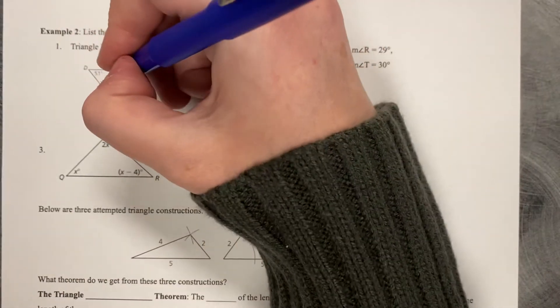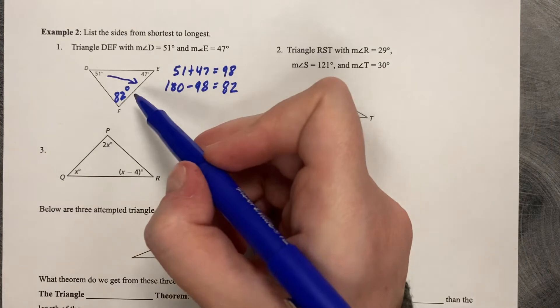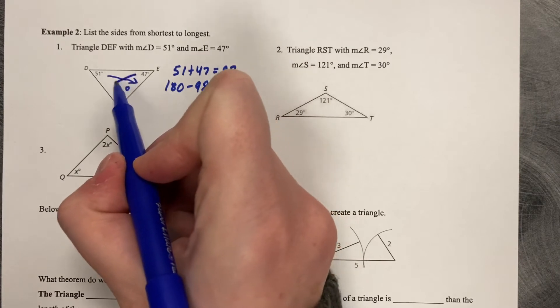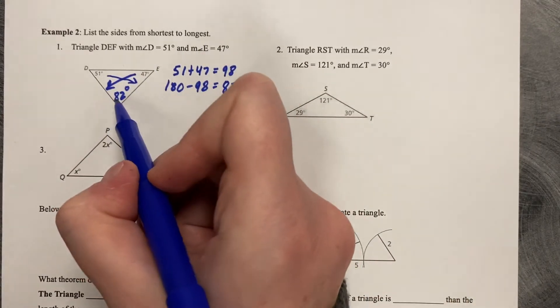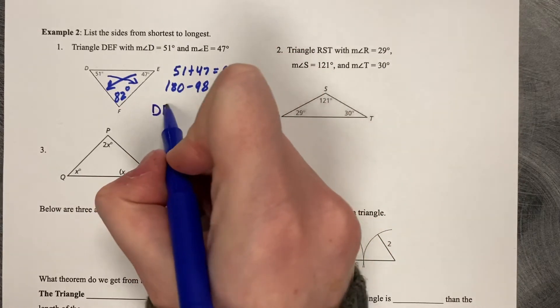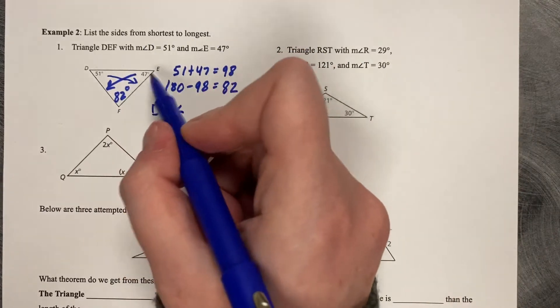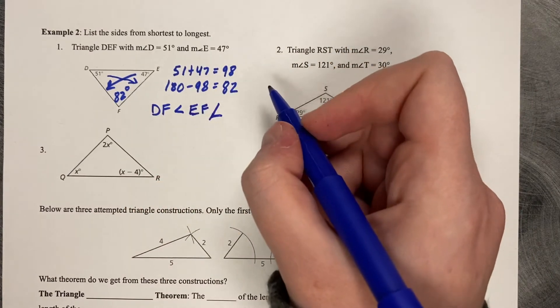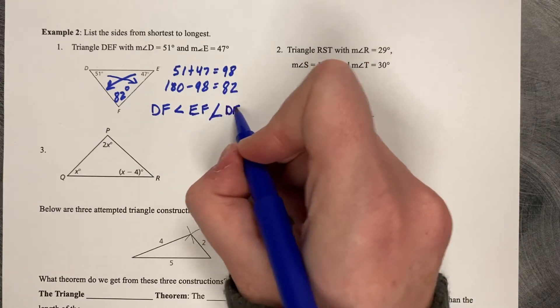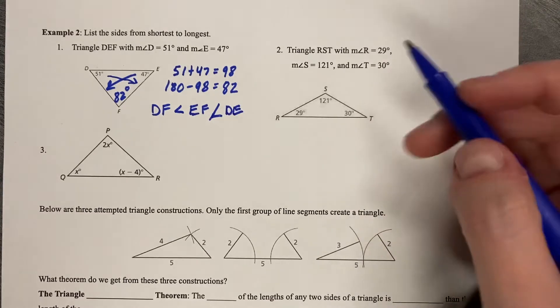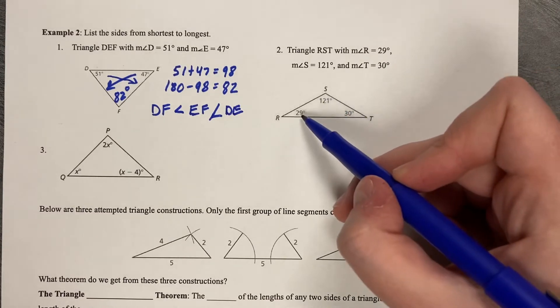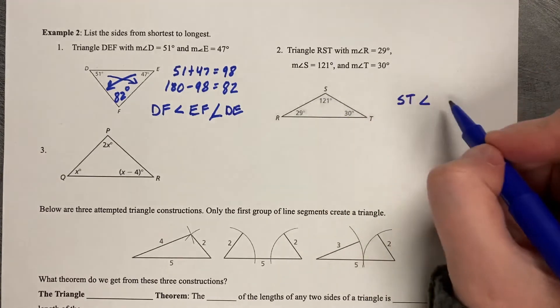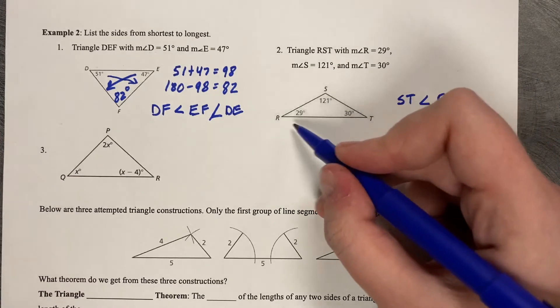So find your smallest one. 51 degrees is opposite of EF. Actually, I'm so sorry. 47 is your smaller one. So we can do that one first. 47 is opposite of DF, is less than EF. Not a comma. Less than our last side length DE. This one's got all three angles on it. So smallest angle is 29. Opposite of ST. 30 is opposite of RS. Opposite of RT.